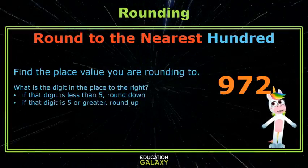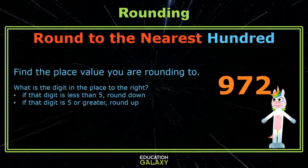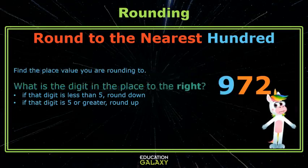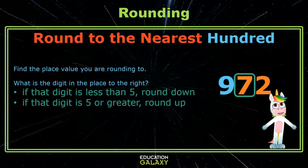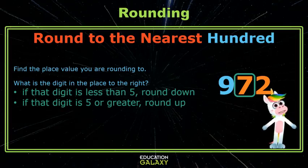Here we're rounding 972 to the nearest 100. So what is the place value we're rounding to? Well, that's the 100's — the 9 is in the 100's place. Next, we ask ourselves, what is the digit in the place to the right? That's the 7. If that digit is less than 5, we round down. If that digit is 5 or greater, we round up. The digit is greater than 5, so we'll be rounding up.